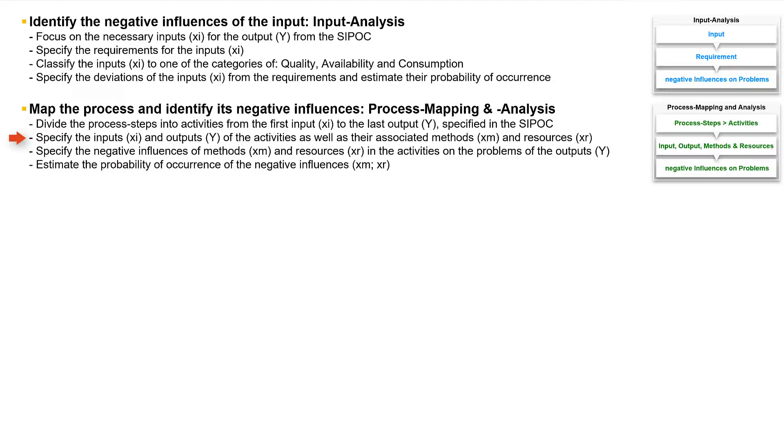We assign intermediate inputs and outputs to the activities as well as their associated methods and resources. This increased transparency allows us to identify the negative triggering influences of the methods and resources in the activities on the problems of the outputs.